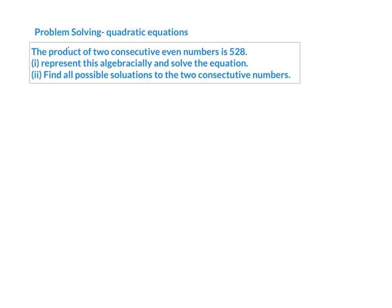The product of two consecutive even numbers is 528. Before I even read any further, I want to underline or circle a few things that have just popped out to me straight away. So the first thing is that they've used the word product. You need to think to yourself, what does the word product mean? We're told we have two consecutive — again you need to understand what the word consecutive means — and even numbers. They've given us a lot of information in a very short sentence, and obviously they've told us the answer is 528.